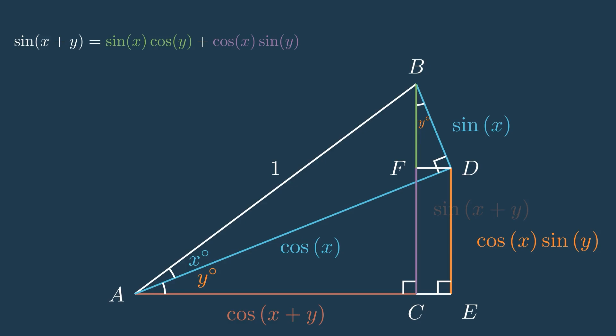Now looking at cosine of x plus y, that total side length is equal to ae minus ce. Again, after doing some rearranging, we find that ae is equal to cosine x times cosine y, and ce equals sine x times sine y. Therefore, the total side length cosine x plus y equals cosine x cosine y minus sine x sine y.